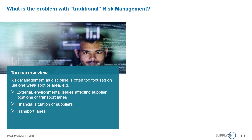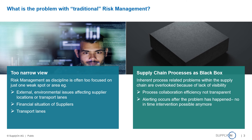When we talk about traditional supply chain risk management, we often see a too narrow view on the topic. Risk management as a discipline is often focused on one or a few weak spots in the entire process chain — either looking at external or environmental issues affecting supplier locations or transport lanes, or on the sourcing side, just the financial situation of suppliers or the transports themselves. Supply chain processes are often considered a black box, and we don't look into the inherent process problems within the supply chain.